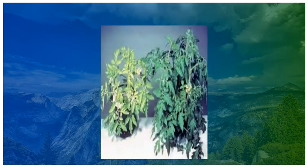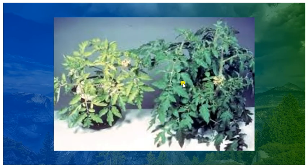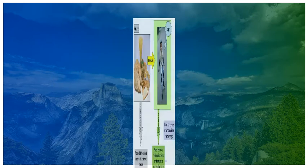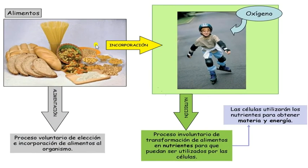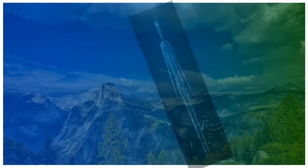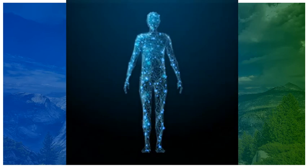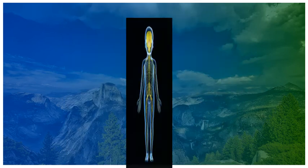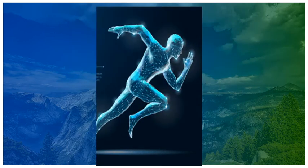¿A qué nos referimos cuando decimos que un organismo está bien nutrido? Si lo vemos más a profundidad, la nutrición es un proceso de transformación entre materia y energía, así como pérdidas y ganancias de esta energía, que se convierten en reservas para llevar a cabo procesos como el mantenimiento de las condiciones internas del organismo, el desarrollo y crecimiento y, en nuestro caso, el movimiento.